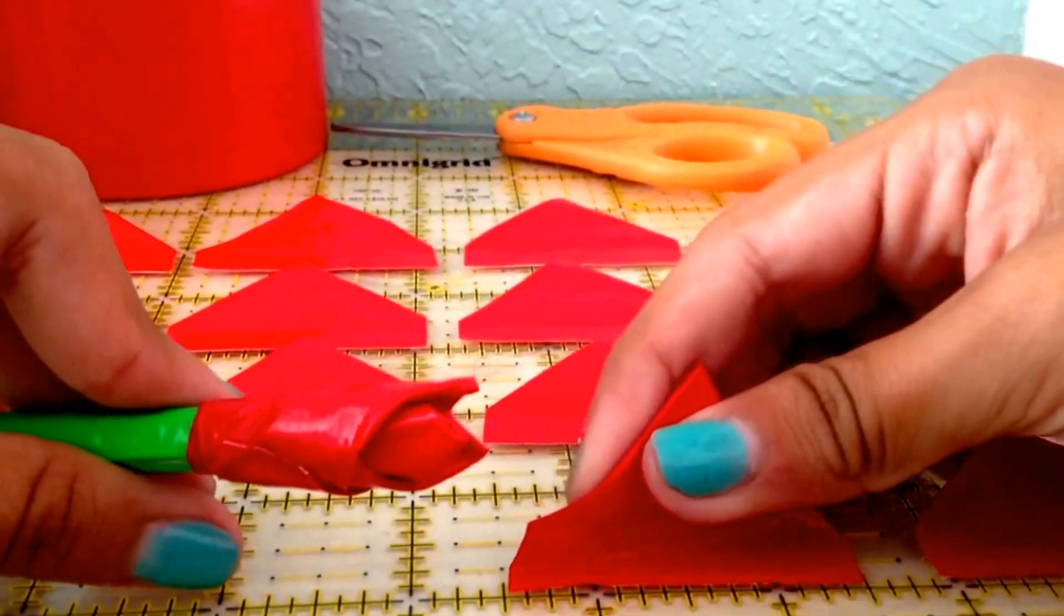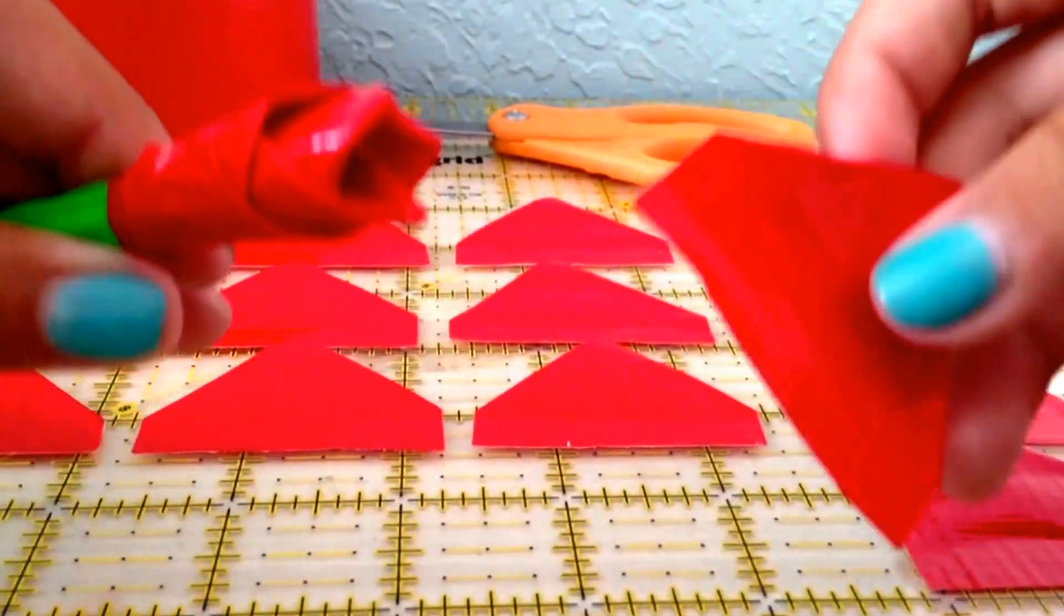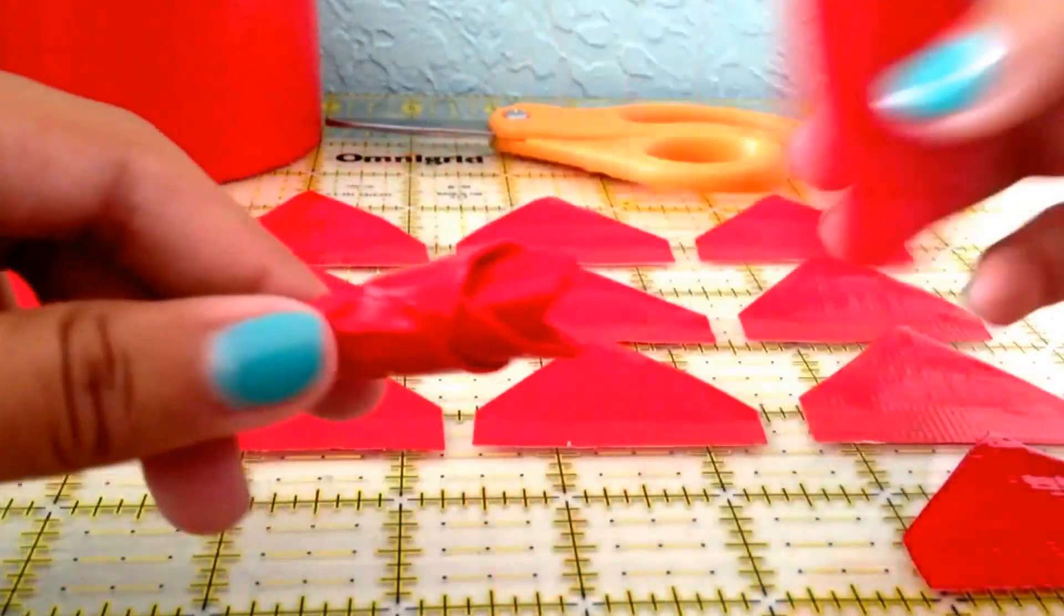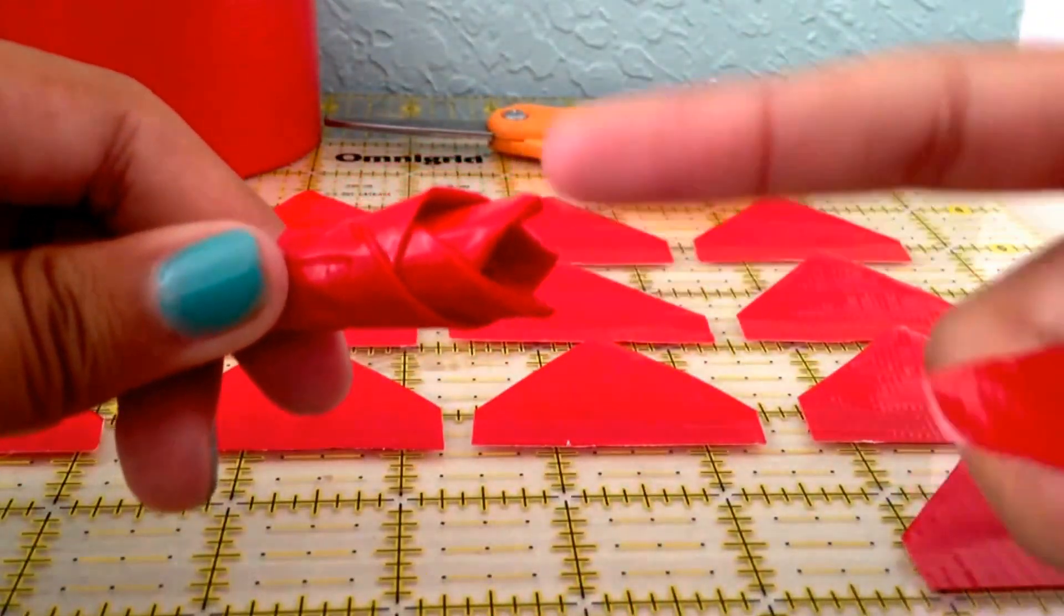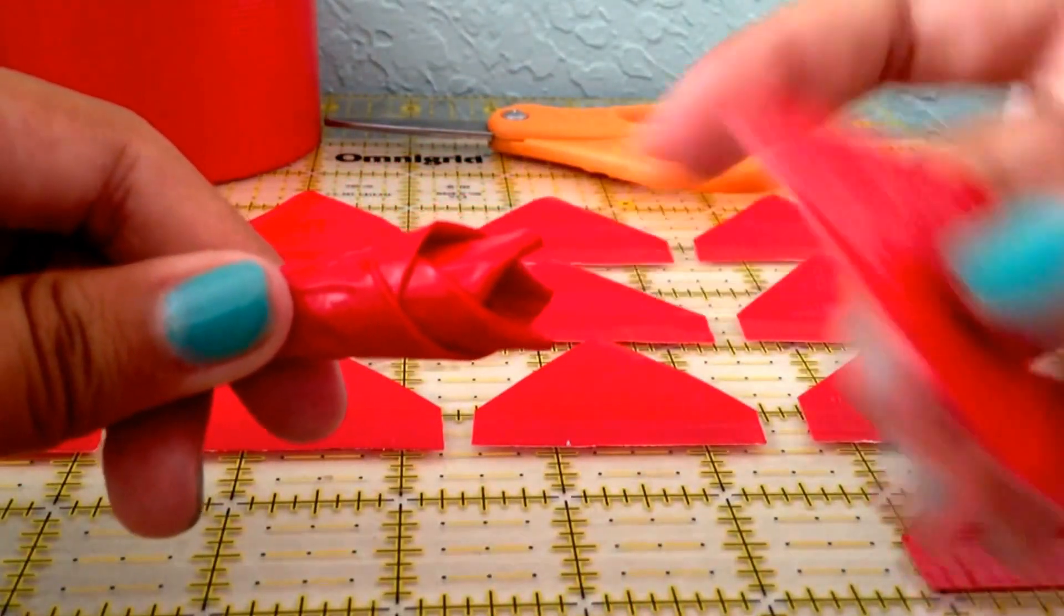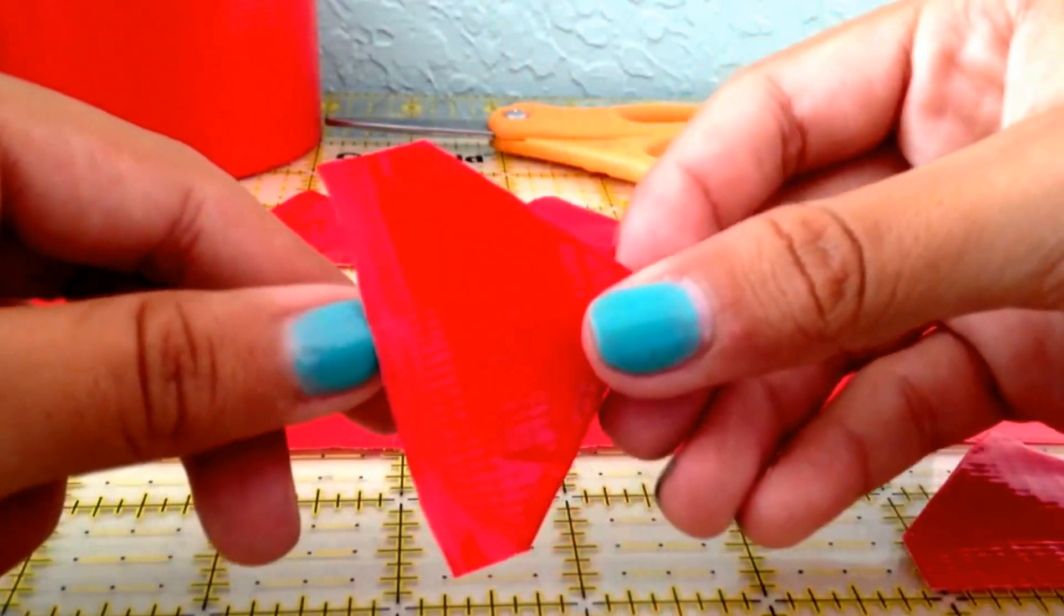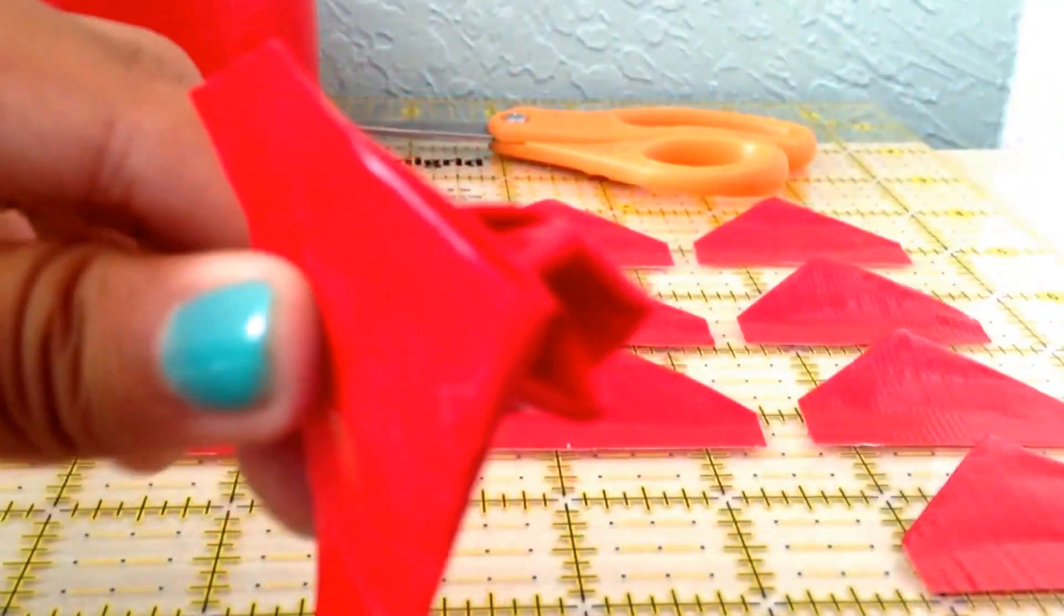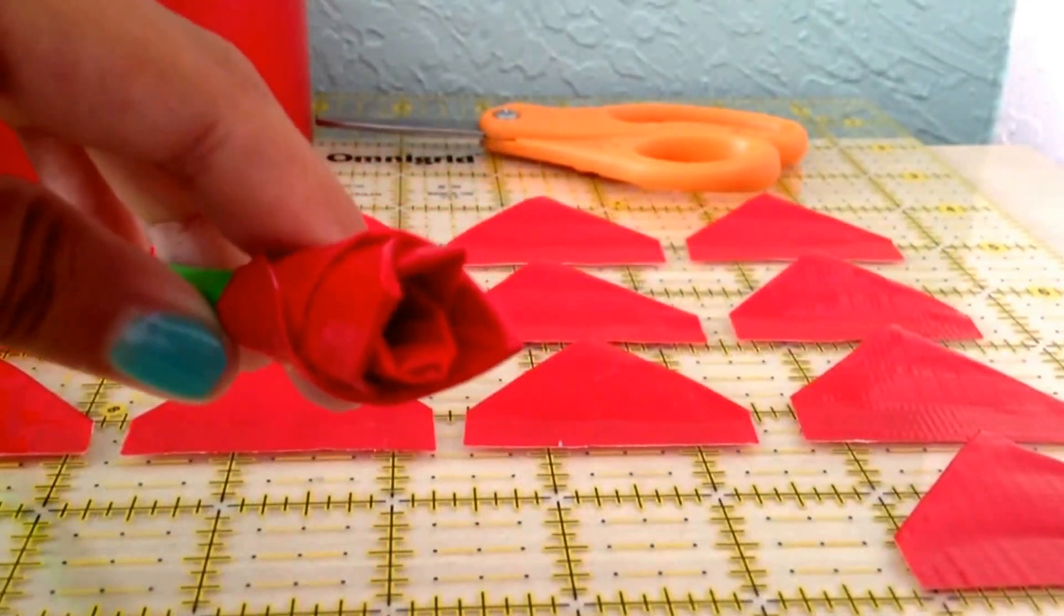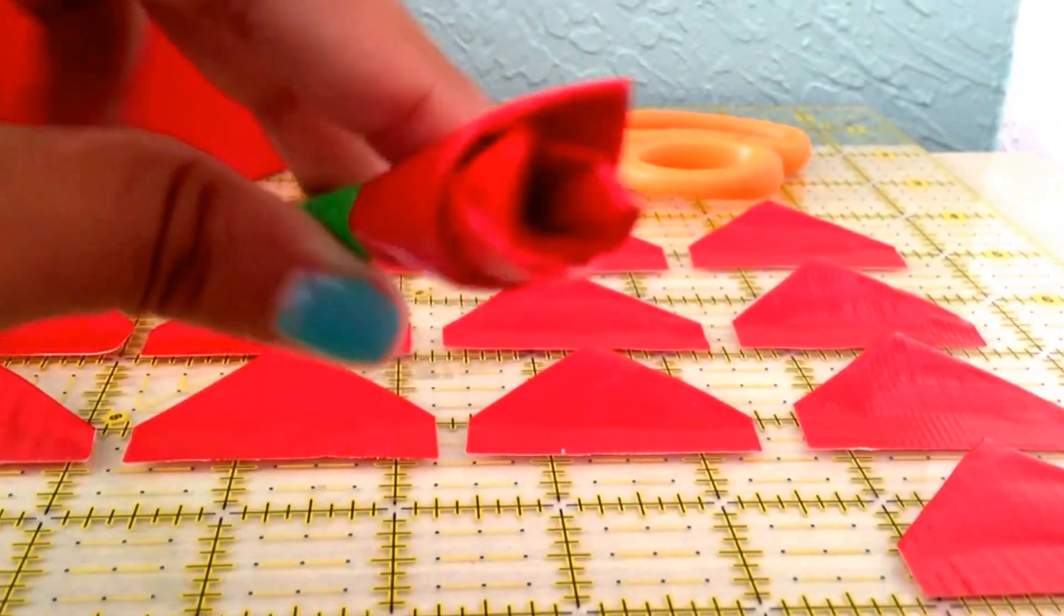Now, take your next triangle and place it where these two petals, in the middle of it. So, again, place it right there. So, this is how your first four petals should look like.